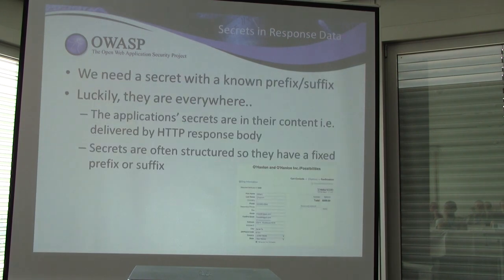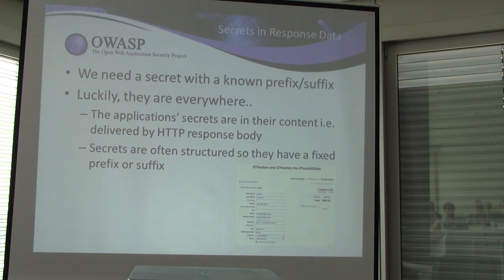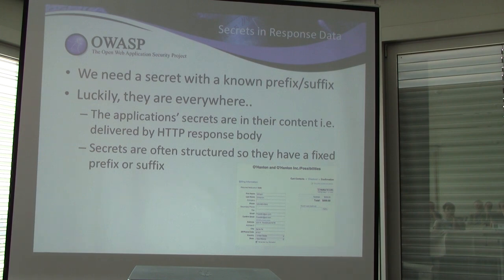Luckily, there are many secrets in responses — in fact, most application secrets are found in their responses. Think about your bank balance: it appears in the response and is often very structured. For example, your bank might display 'this is your bank balance' followed by the amount. These secrets are application-specific though — for the bank it's the balance, for Facebook it might be your Facebook ID. It's not like the original CRIME where you could always aim for the cookie. We are left with finding a chosen plaintext location in the response, equivalent to the URL for request attacks.